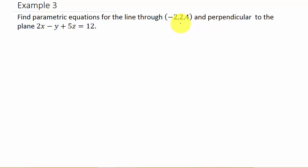Here it says find parametric equations for the line through the point (-2, 2, 4) and perpendicular to the plane 2x - y + 5z = 12. Alright, so we need to find our direction vector, so let's call that V.